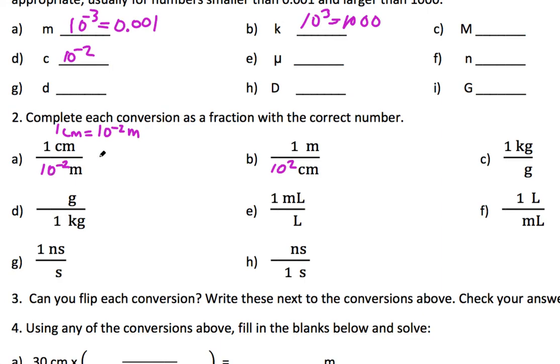1 centimeter, and this line represents equals 10 to the minus 2 meters. Well, it doesn't matter which direction we go. We could say 10 to the minus 2 meters equals 1 centimeter as well, right? So we can flip all of these. And let's do that: 10 to the 2 centimeters, or 100 centimeters equals 1 meter.